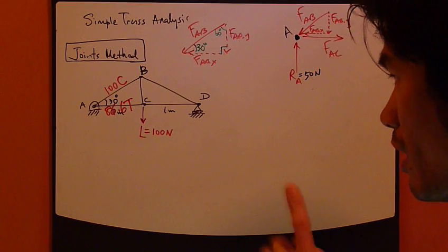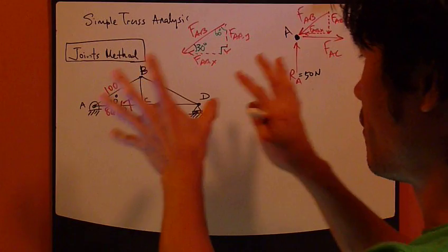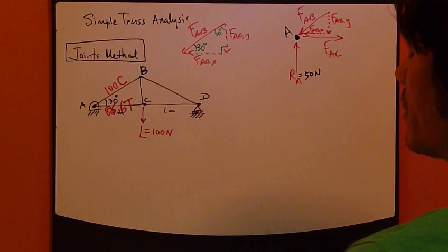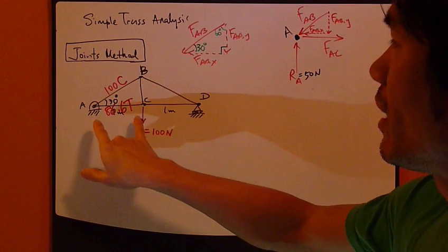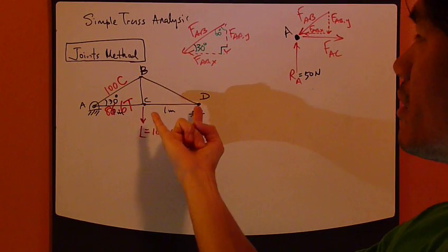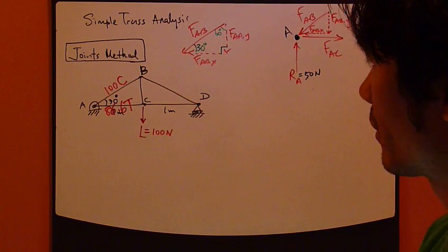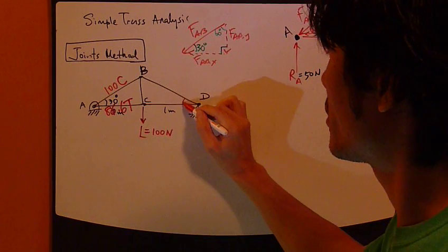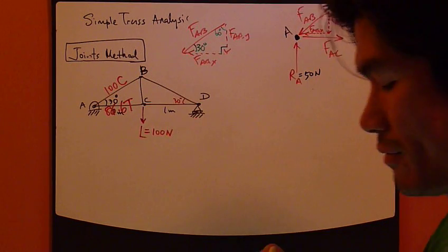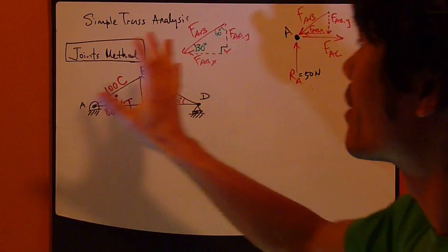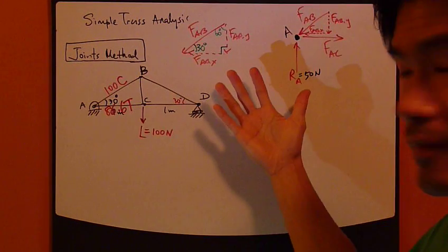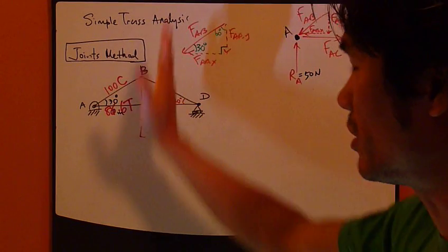Now, before we go on, however, in this very simple example, AC is one meter, CD is also one meter. This is 30 degrees, so this is also 30 degrees. This truss is symmetrical. This means that everything is mirror image. It's BC being in the middle.